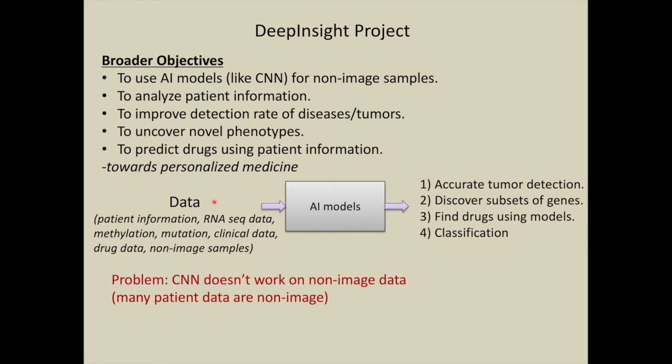The input data can be from patients such as RNA sequence data, methylation data, mutation data, clinical data, drug-related data, or in general any non-image samples. The AI model, which is basically DeepInsight, outputs accurate tumor detection, discovers subsets of genes, finds drugs using models, or performs classification.